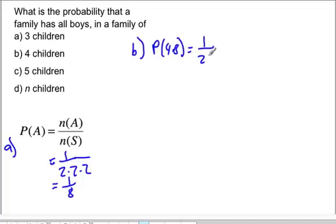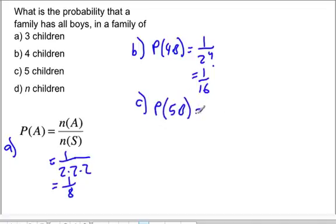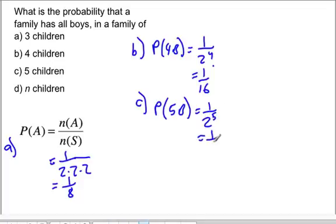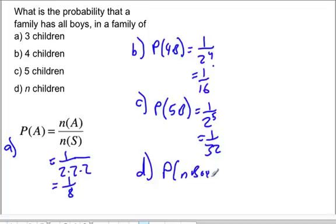For part b, the probability of four boys is one over two to the four, which is one sixteenth. The probability of five boys is one over two to the five, which is one over thirty-two. In general, for n children, the probability of n boys is one over two to the n.